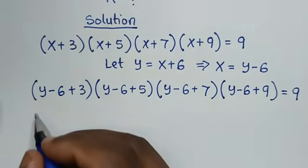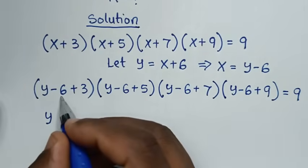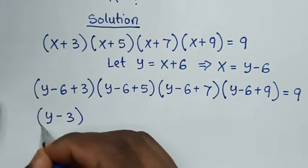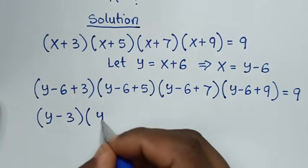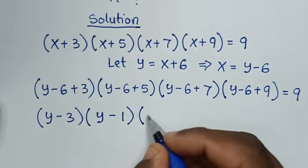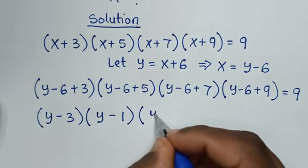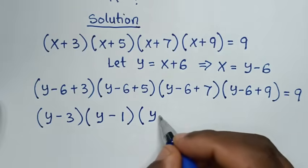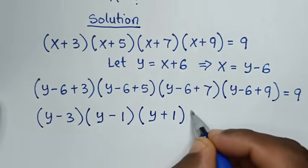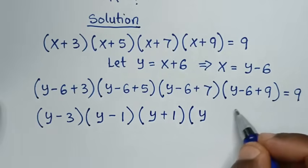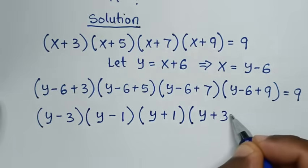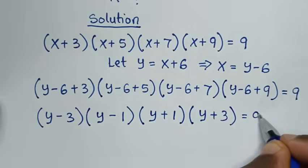Simplifying each bracket: (y−3)(y−1)(y+1)(y+3) = 9.